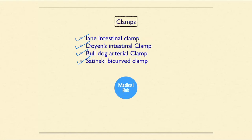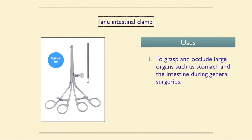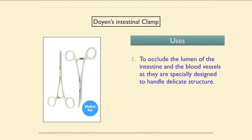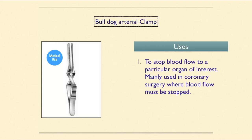The Lane intestinal clamp is used to grasp and occlude large organs such as the stomach and intestine during general surgery. The Doyen's intestinal clamp is used to occlude the lumen of the intestine and blood vessels; it is specially designed to handle delicate structures.